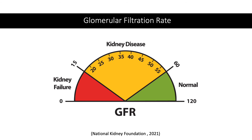A GFR test is used to help diagnose kidney disease at an early stage when it is most treatable. The GFR may also be used to monitor people with chronic kidney disease or other conditions that cause kidney damage, such as diabetes and high blood pressure. During a GFR test, a healthcare provider will take a blood sample from a vein in your arm using a small needle. A small amount of blood will be collected into a test tube or vial, and this usually takes less than five minutes.